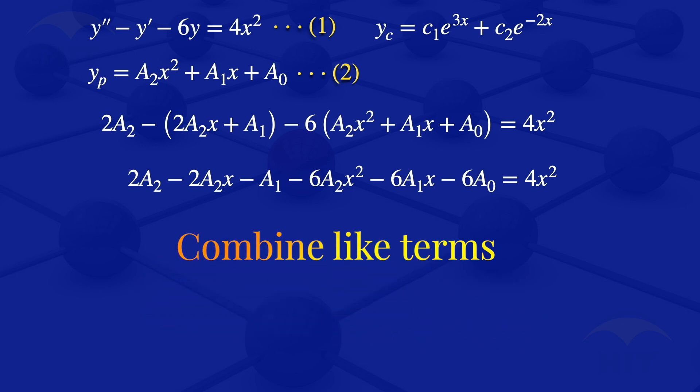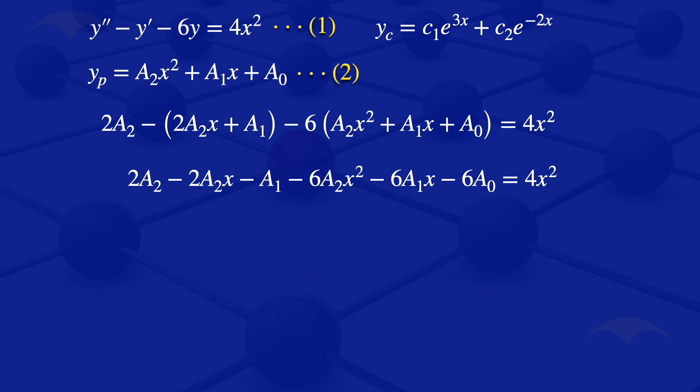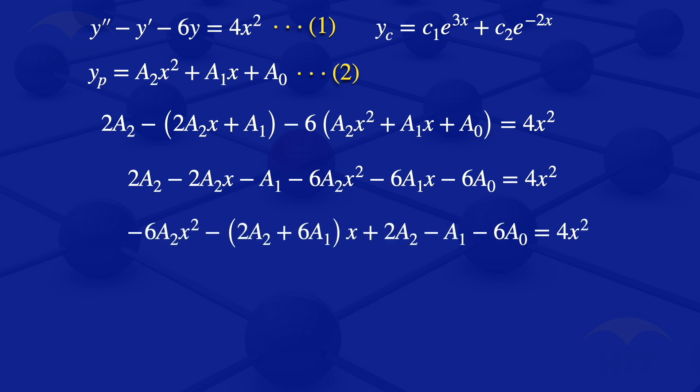We now combine like terms — grouping x squared terms, x terms, and constants separately. This gives: minus 6a2·x squared minus (2a2 plus 6a1)·x plus (2a2 minus a1 minus 6a0) equals 4x squared.